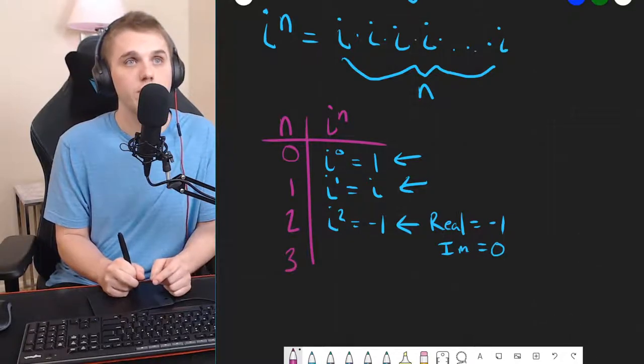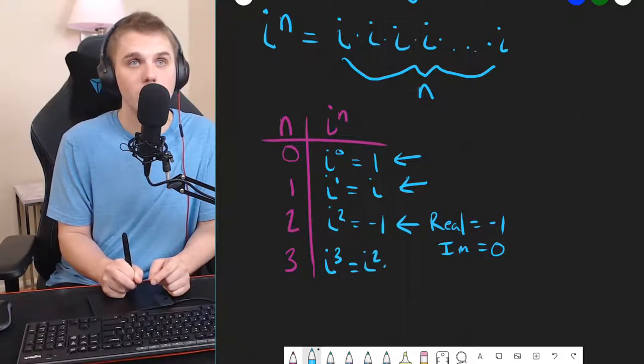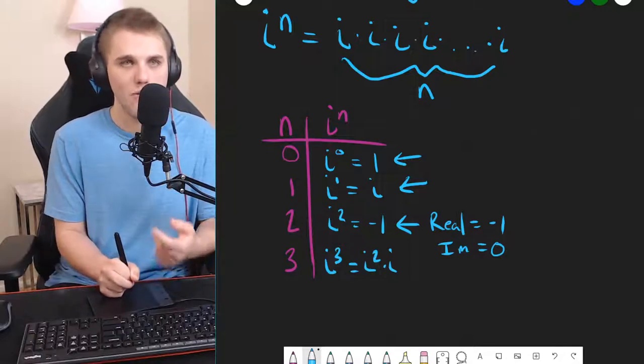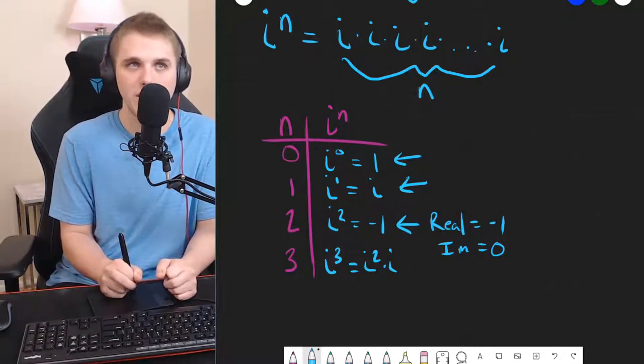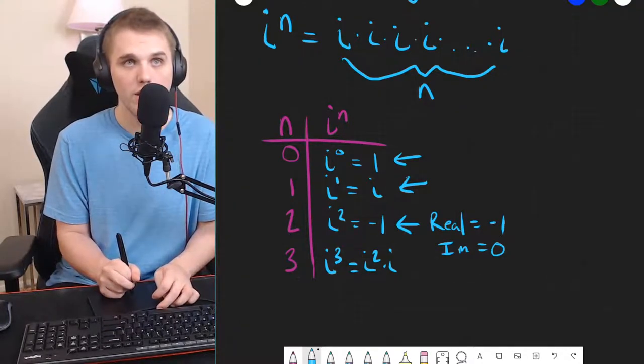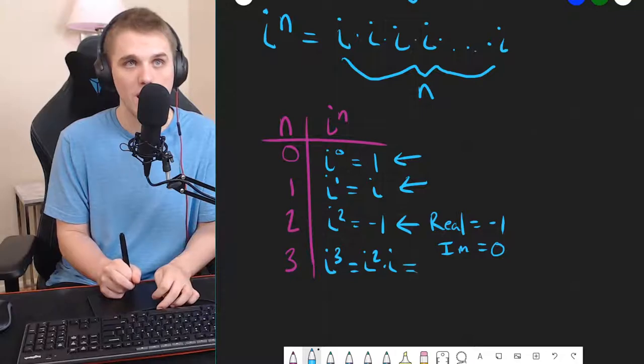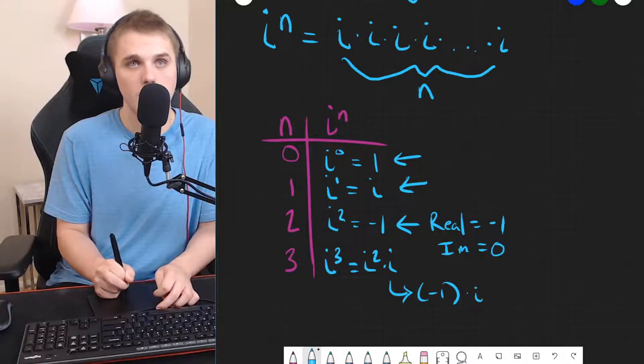And then if we go to 3, i cubed is just i squared times i. And if I write it like this, it makes it easy to figure out what i squared times i is because I already know what i squared is. i squared is negative 1. And so, i squared times i is negative 1 times i, which is just negative i.